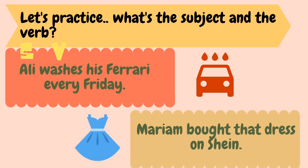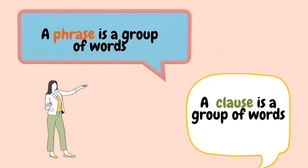'Mariam bought that dress on sale.' Your subject is Mariam and the verb is 'bought.' Good job! So now that you're clear with that, let's move on — what is a phrase and what is a clause?